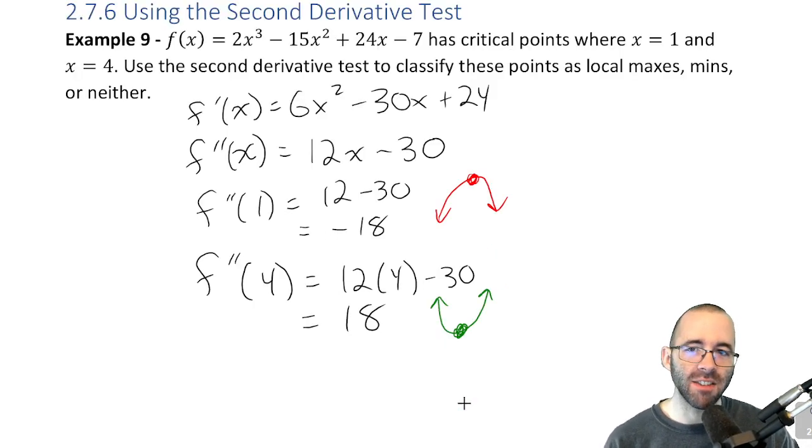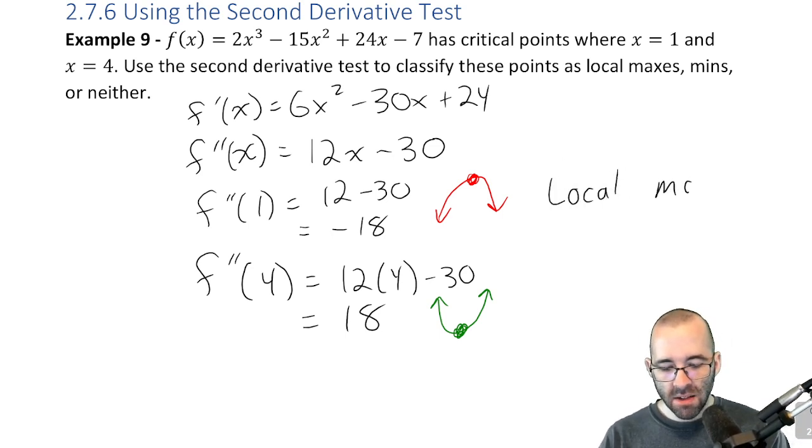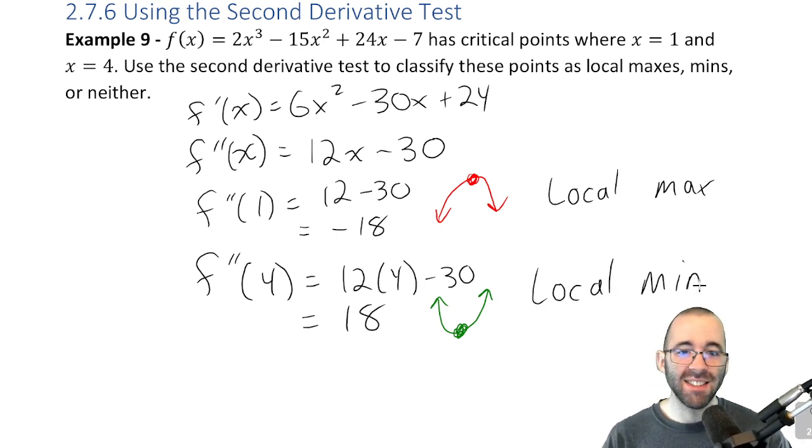We should still write our answer, right? This right here is a local max. This right here is a local min. That's it.